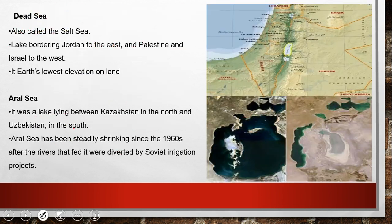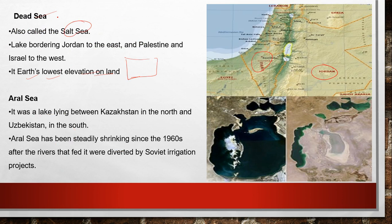The Dead Sea is located between Jordan, Israel, and Palestine. It has the Earth's lowest elevation on land — the lowest elevation of any land surface on Earth is at the Dead Sea.